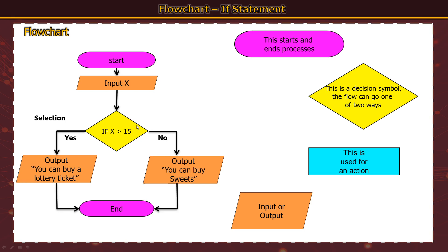This middle part is called an operator. Whenever you see the word 'if' used, it is in fact a selection — it selects a path based on the answer. When we entered 15 it selected the 'no' path, hence the term selection. That may come up in your exam: it might ask where is the selection in this algorithm or pseudocode — simply look for the word 'if'. The 'greater than or equal to' symbol is the operator used here.